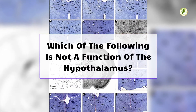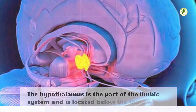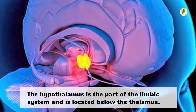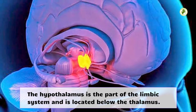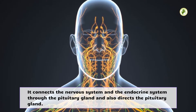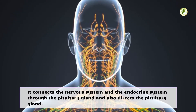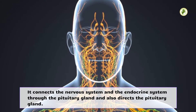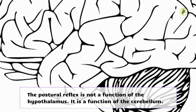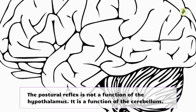Which of the following is not a function of the hypothalamus? The hypothalamus is part of the limbic system and is located below the thalamus. It connects the nervous system and the endocrine system through the pituitary gland and also directs the pituitary gland. The postural reflex is not a function of the hypothalamus — it is a function of the cerebellum.